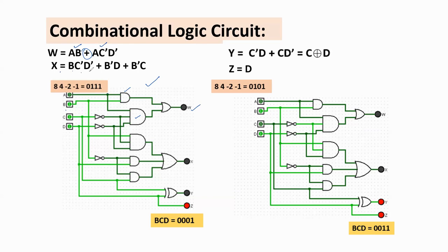For X = BC'D' + B'D + B'C: take a three-input AND gate for BC'D', using the C' and D' already obtained from NOT gates. B'D uses a NOT gate on B to get B', then AND with D. B'C uses B' and C in another AND gate. These three outputs are ORed to give X. For Y = C XOR D, an XOR gate with inputs C and D produces Y. Z = D directly.